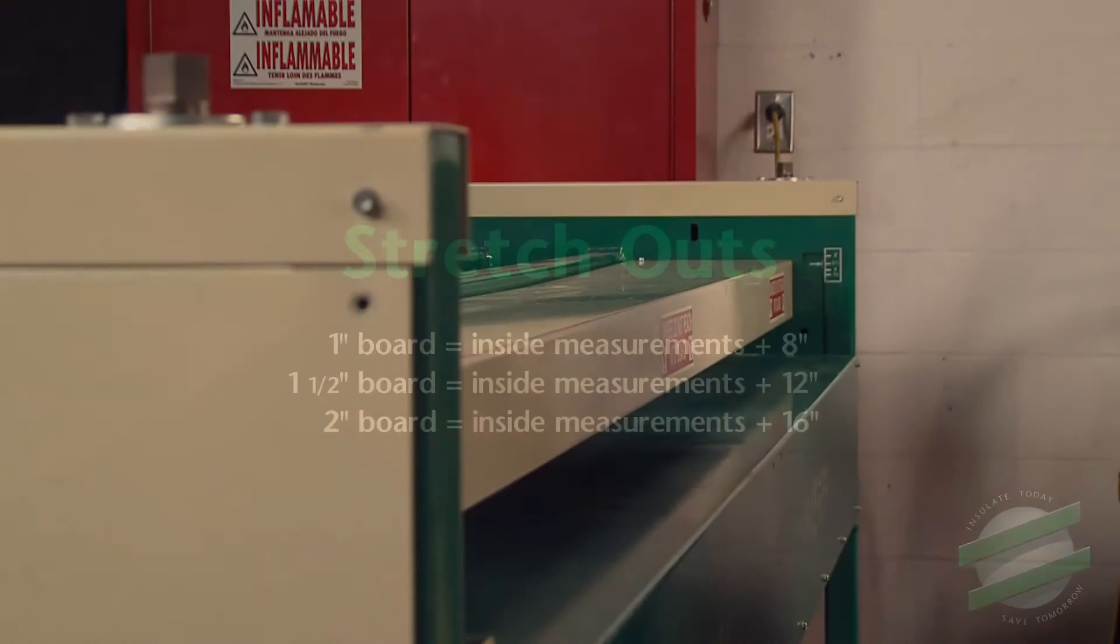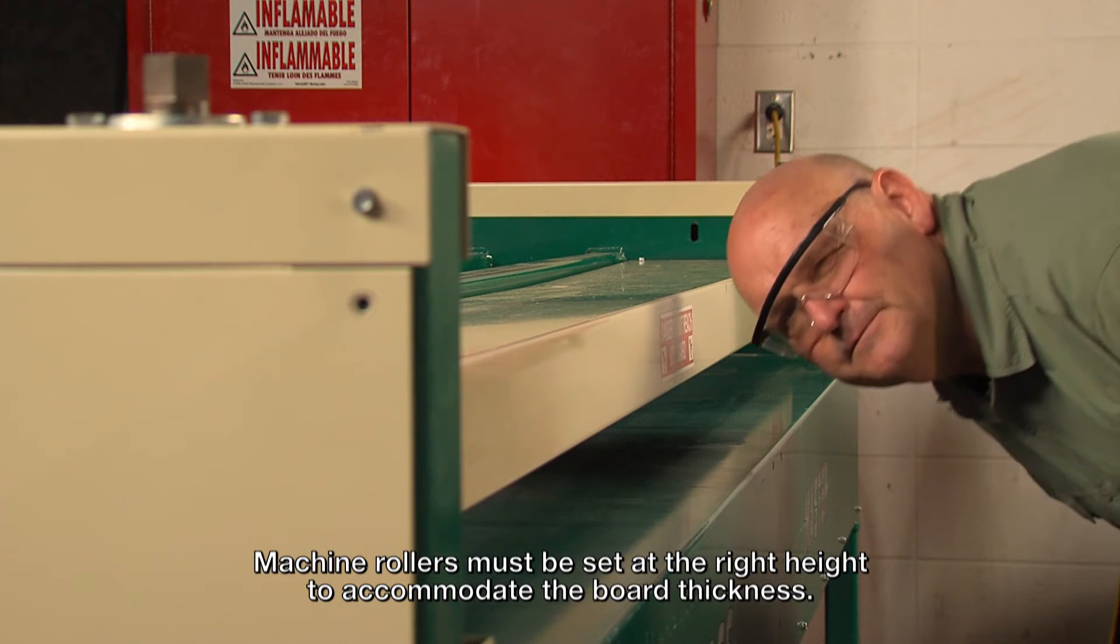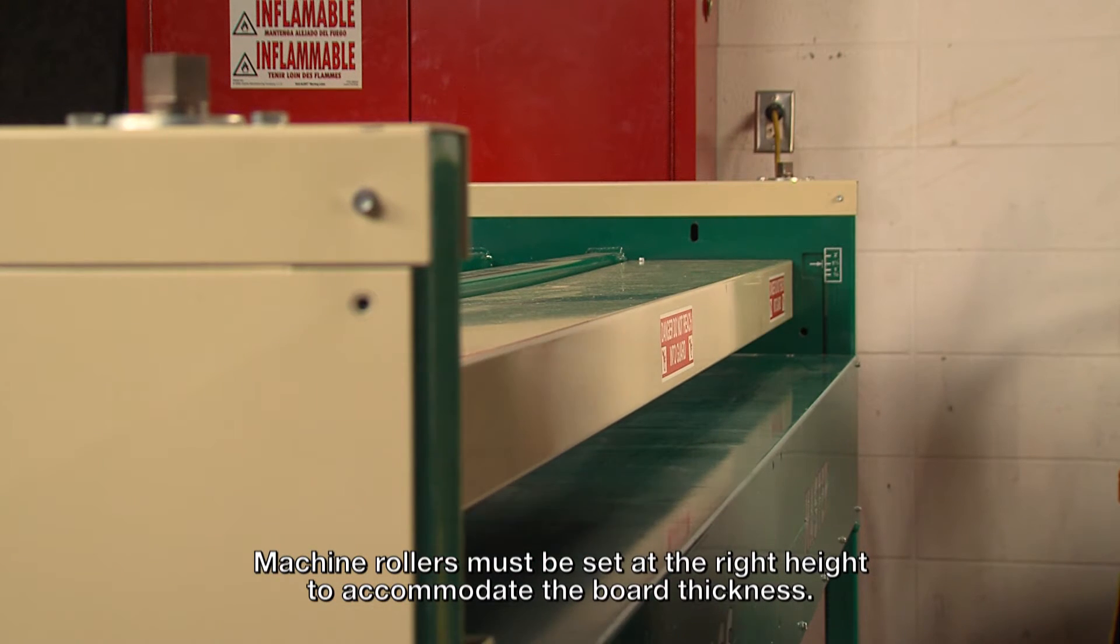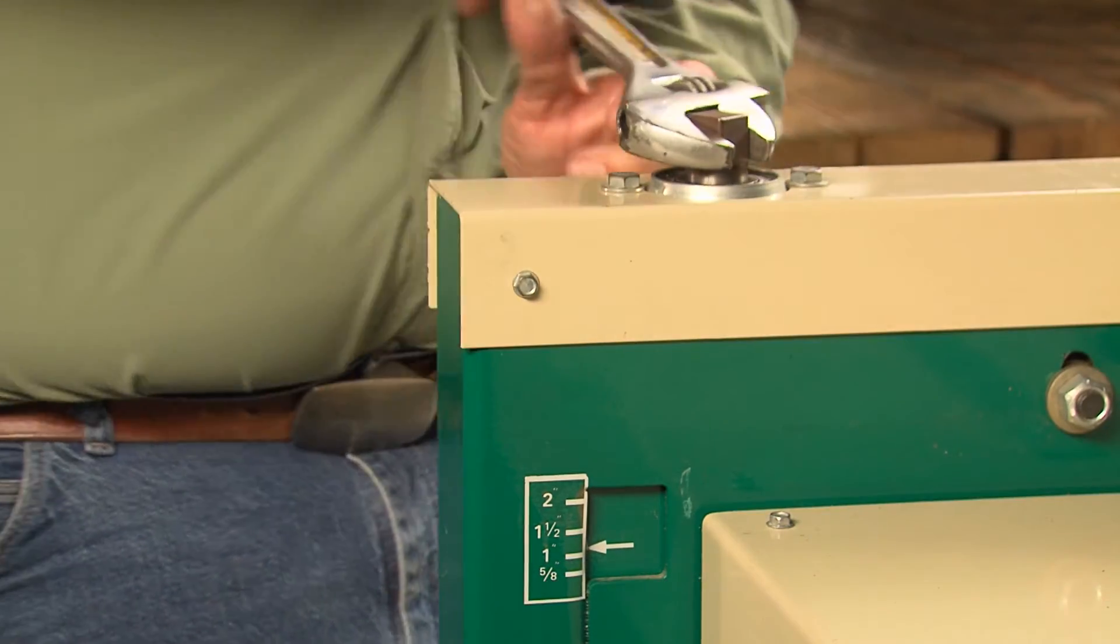One last step before we start grooving: check to make sure the machine is set at the right height for the board thickness. Each end of the machine has a square post that allows you to raise or lower the rollers on the toolbar.